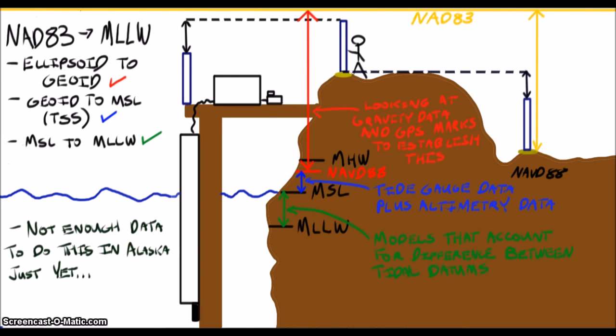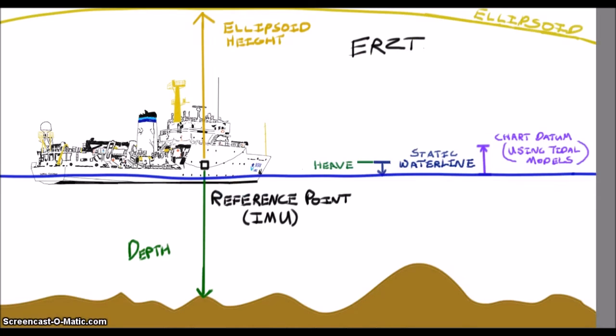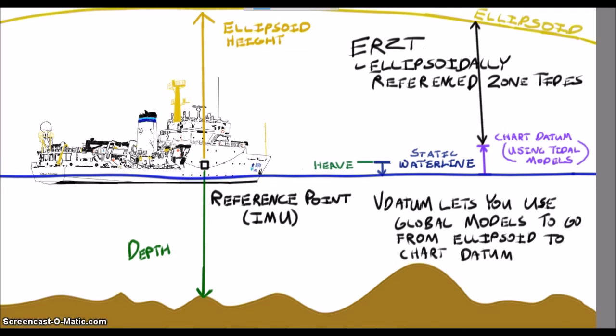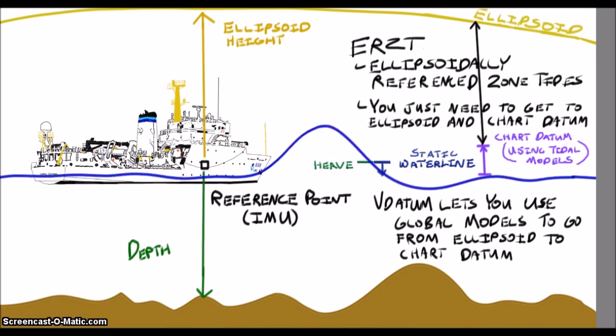Well, there's another technique called ERZT, or ellipsoidally referenced zone tides, that can help here. See, what we lack in places like Alaska is the network of established measured tidal values, geodetic measurements, and tide model predictions that are a prerequisite to the availability of Vdatum.